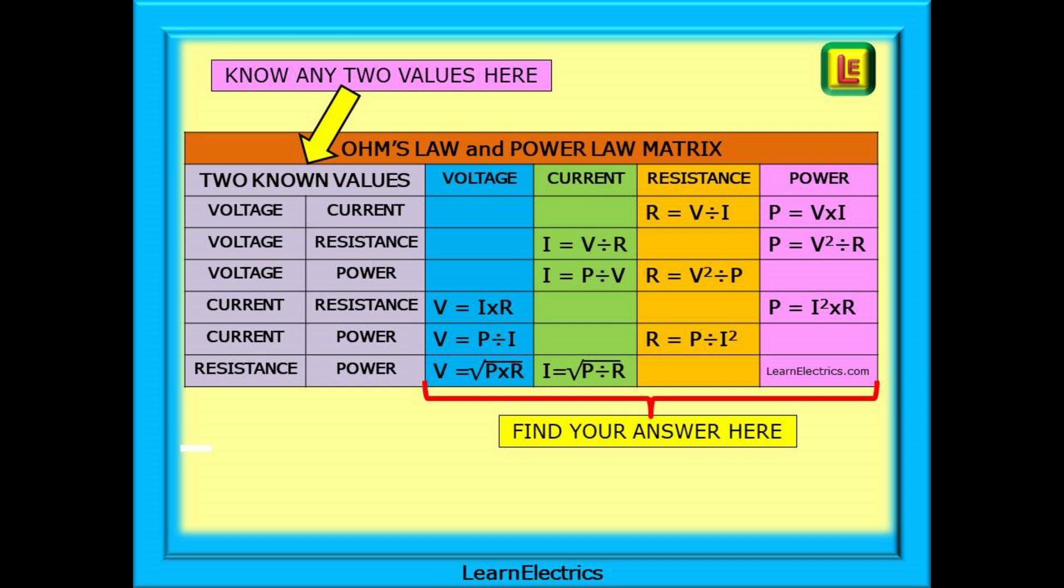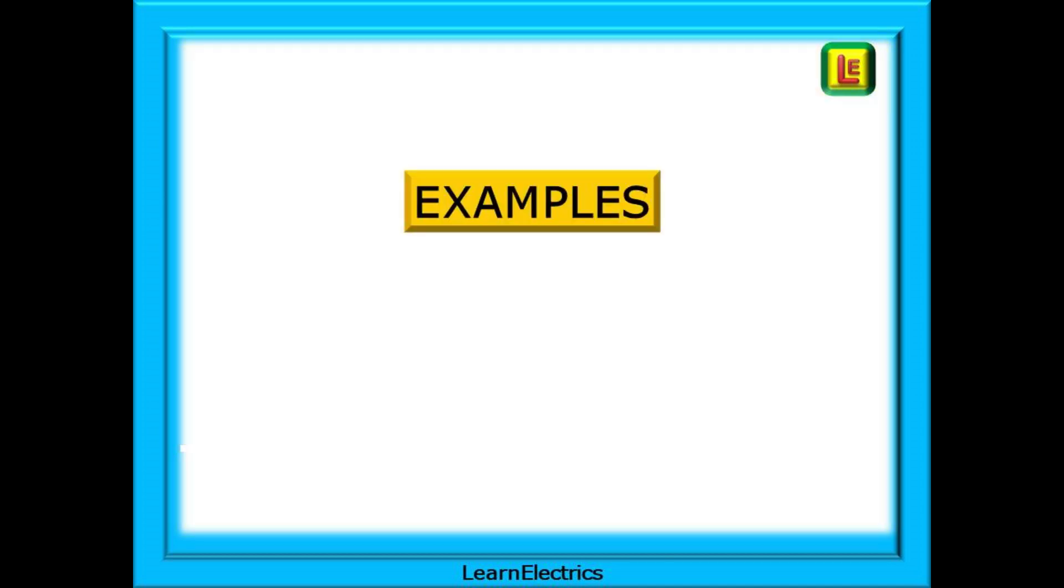We can quickly search for the two values that we already know, and the matrix will show you the required calculation to find the answers for the other two values. We can work through some examples now, so that you better understand.